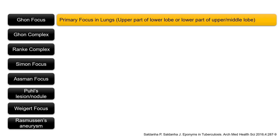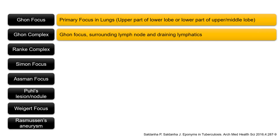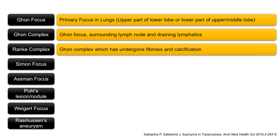Now let's learn some eponymous foci of tuberculosis. The Ghon focus is the primary focus in the lungs, mainly seen in the upper part of the lower lobe or the lower part of the upper or middle lobe — where the tubercle bacilli first lodge. The Ghon complex refers to three things: the Ghon focus, the surrounding regional lymph node, and the draining lymphatics. The Ranke complex refers to the Ghon complex which has undergone fibrosis and calcification — occurring when the person has intact immunity and good host response.